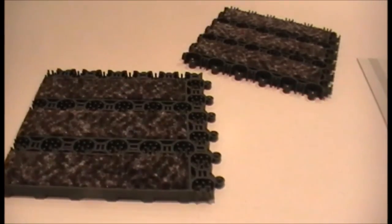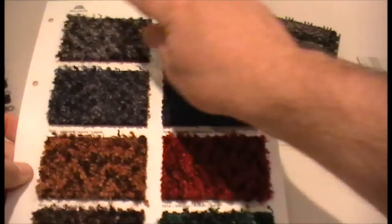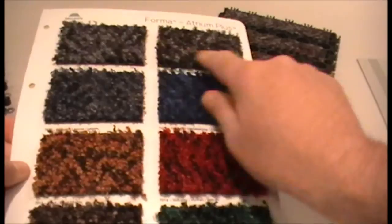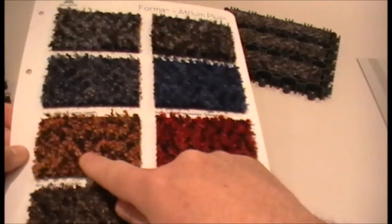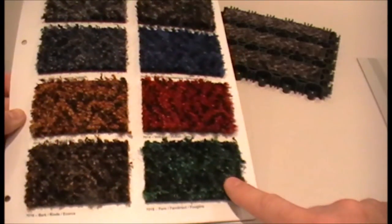Forma is available in 8 colourways as you can see here: light ash, ammonite, lagoon, twilight, sand, volcano, bark and fern.